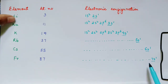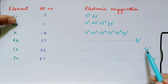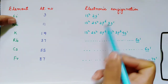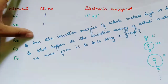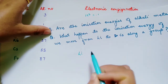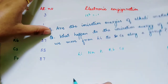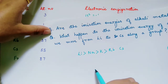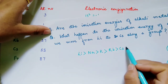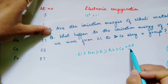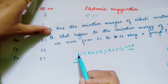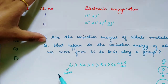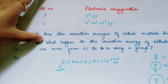Which one will be easy to remove? Obviously cesium, because the distance of the valence electron in the case of cesium is very, very large compared to the other elements. So, what is the trend of ionization energy in the case of alkali metals? Lithium has higher ionization energy than sodium, sodium than potassium, potassium than rubidium, and rubidium than cesium. That means ionization energy is less in the case of cesium and more in the case of lithium, because in lithium the distance of the valence electron from the nucleus is small, so it becomes very difficult to remove that electron.